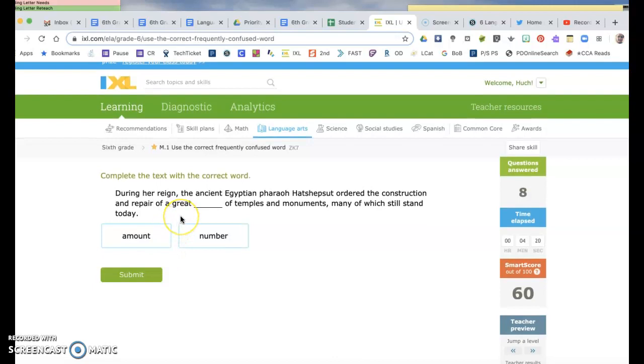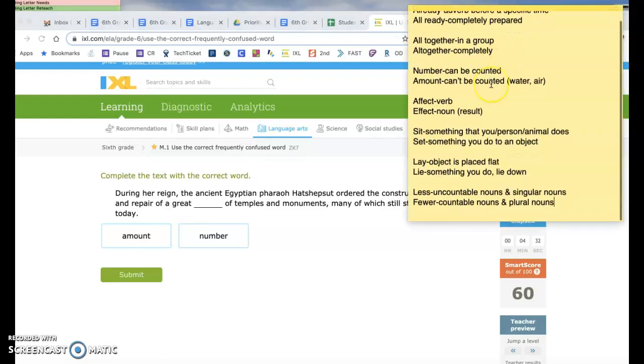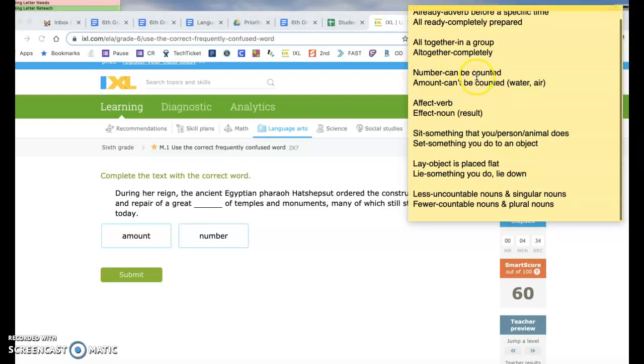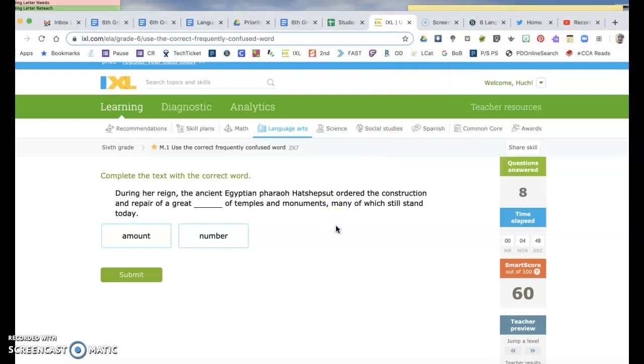During her reign, the ancient Egyptian pharaoh Hatshepsut ordered the construction and repair of a great amount or number of temples and monuments. This is on my cheat sheet. Number can be counted, so you could count the number of monuments. So I think that's what it's going to be. Amount is something that's not able to be counted, like you can't count the amount of air in the room, so that would go with amount.